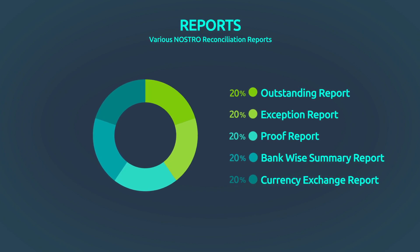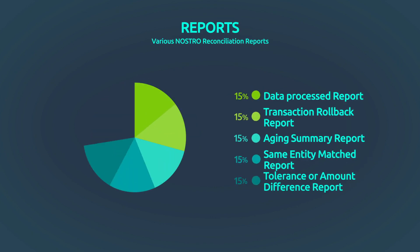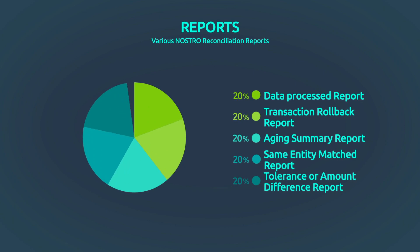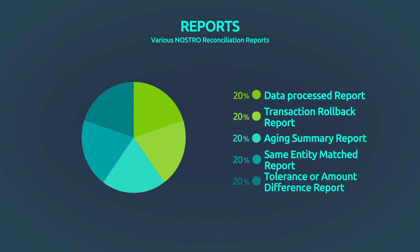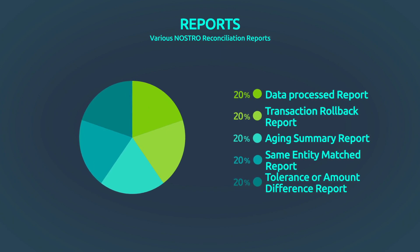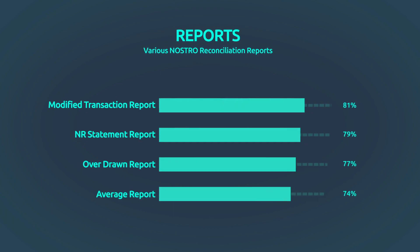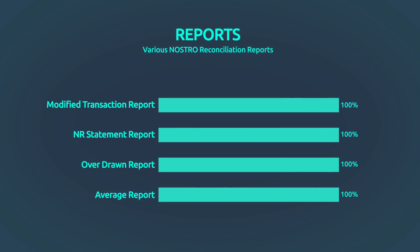Additional reports include: bank-wise summary report, currency exchange report, data processed report, transaction rollback report, aging summary report, same entity matched report, tolerance or amount difference report, and modified transaction report.